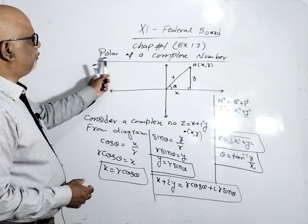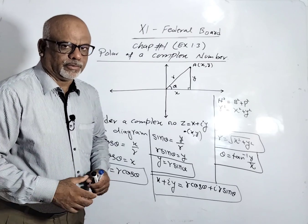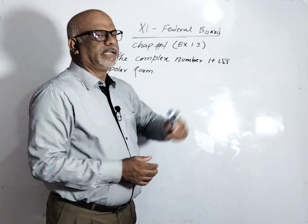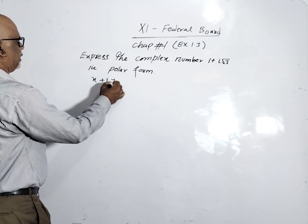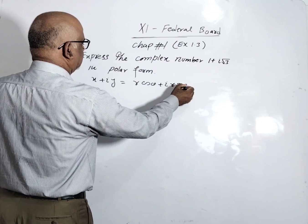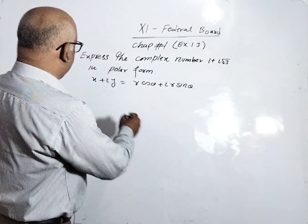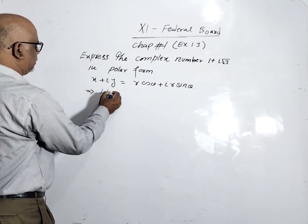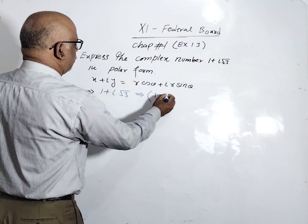Now we have to express the complex number 1 + i√3 into the polar form. We have discussed that x + iy = r cos θ + i r sin θ. We need to convert 1 + i√3, which we can write as the ordered pair (1, √3).